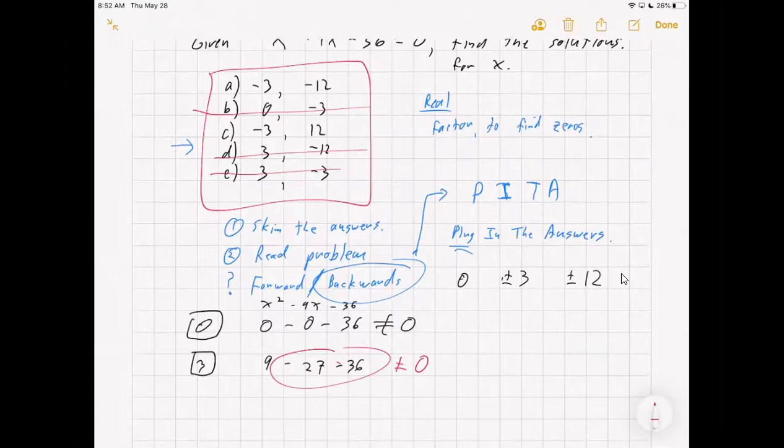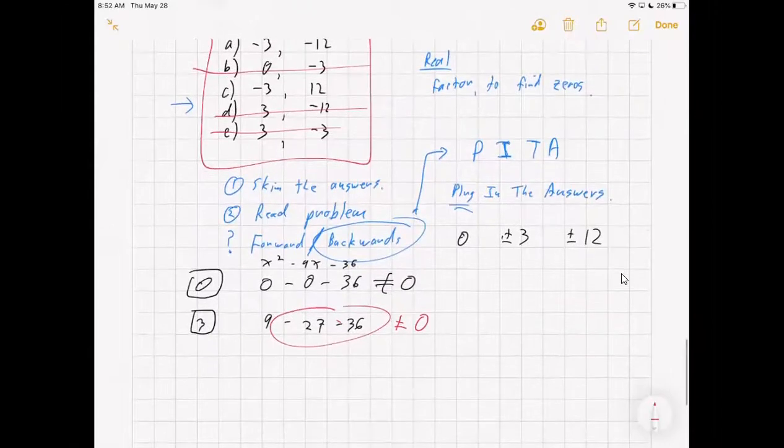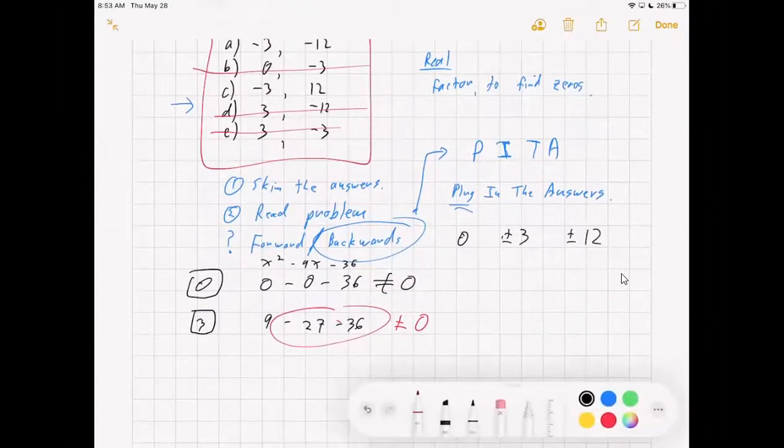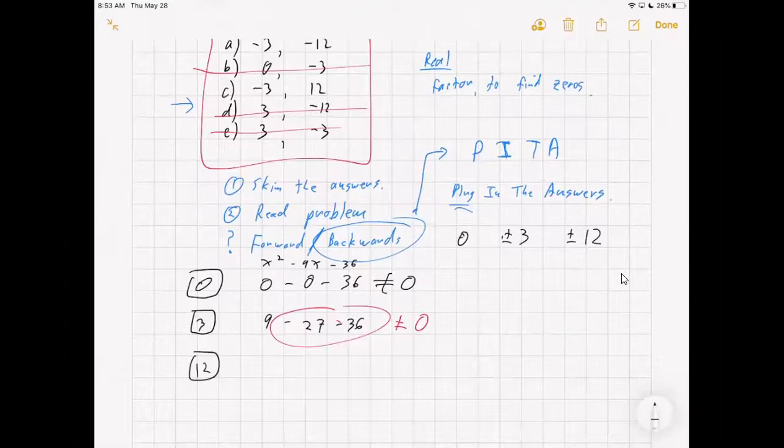So I don't even have to check negative three, because the only answers left have negative three in them. So the only thing I need to determine is it 12 or negative 12. And the easier one to check would be the 12. So you try 12, and you square it, and you get 144, nine times 12.